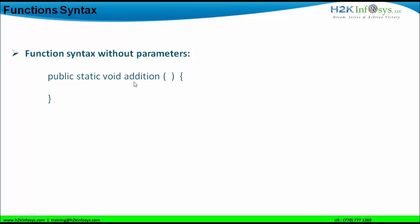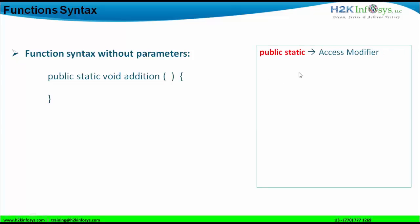In this particular example, the function name is 'addition' with a return type of void. It is a static function because the static keyword is used, and it has a public access specifier. So 'public static' is the access modifier. It is compulsory to define the access modifier for the function, and it is also compulsory to define the function as static or non-static. The function must have a return type — right now the return type is void, but other return types include integer, float, long, boolean, char, and string.